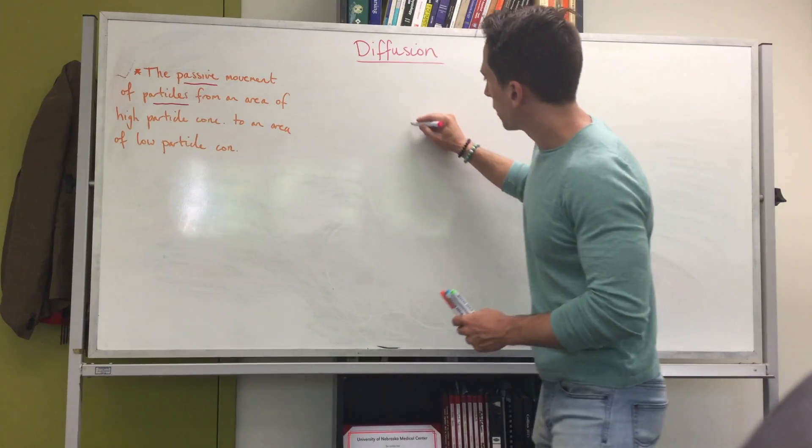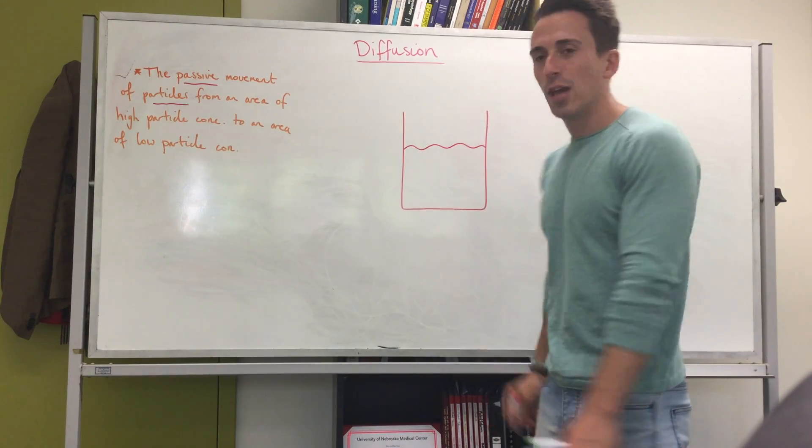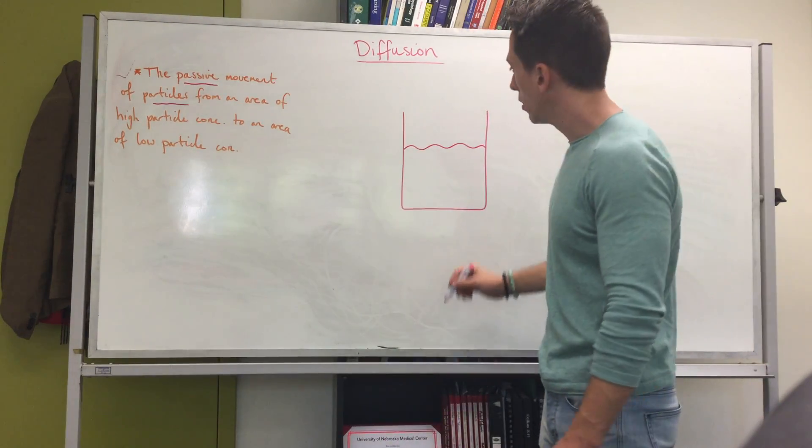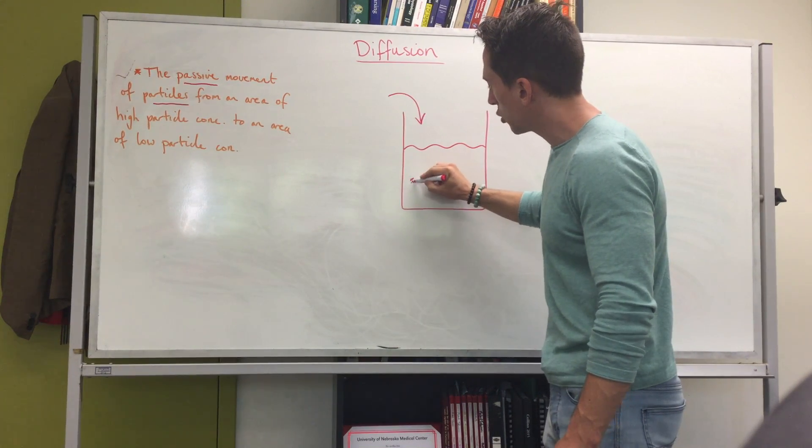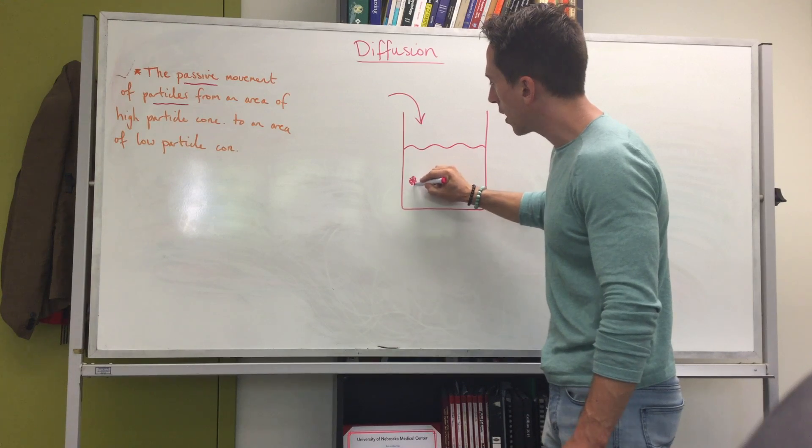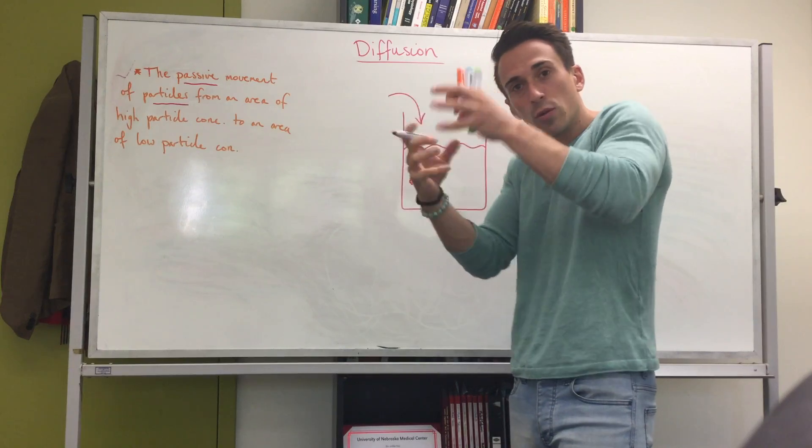Let me give you a visual example. If I were to get a container of water and we were to drop a sugar cube into that water, that sugar cube contains a high concentration. It's basically just glucose shoved in all together, so it's an area of high glucose concentration.